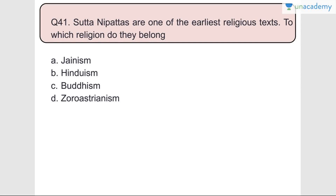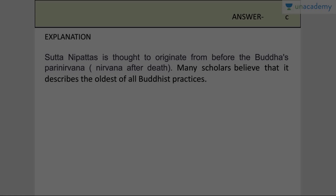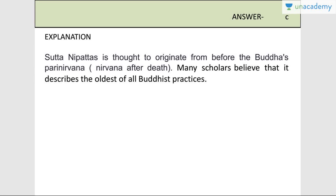Question number forty-one: Suttanipata is one of the earliest religious texts. To which religion do they belong? Suttanipata relates to the Buddha's Parinirvana - nirvana after death. Answer is C - Buddhism. It is thought to originate from before the Buddha's Parinirvana and many scholars believe it describes the oldest of all Buddhist practices.